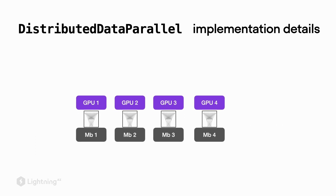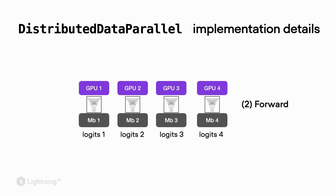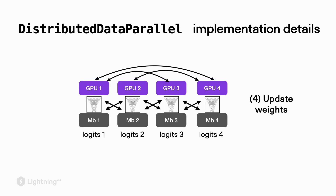Similar to regular data parallelism, DDP computes the forward pass on each GPU separately to obtain the logits. However, DDP also computes the backward pass, loss, and gradients on each GPU separately. In regular DataParallel, everything is transferred to the first GPU to compute the loss — DDP avoids this transfer step, making it more efficient. There is then a communication between GPUs to compute the updated weights, also without a transfer step, meaning fewer transfers overall compared to DataParallel.